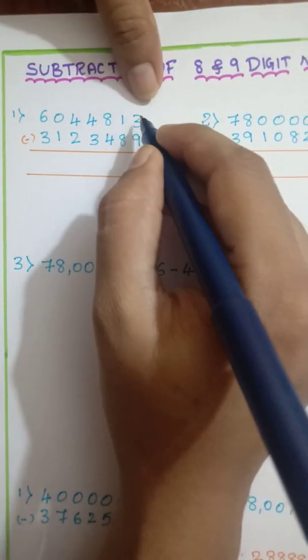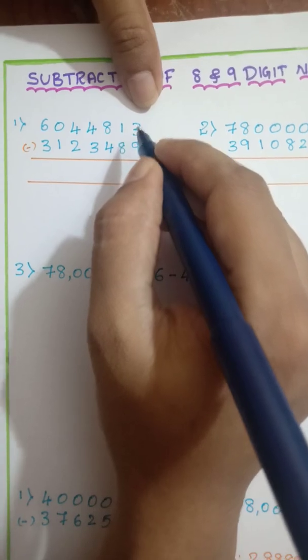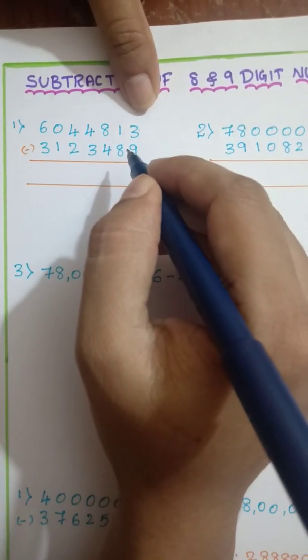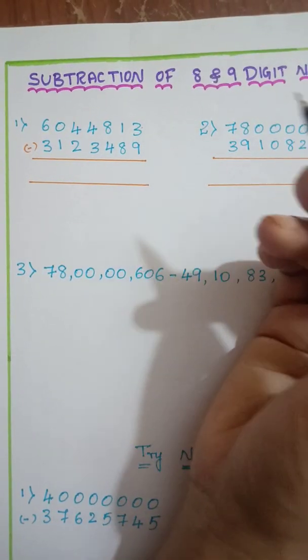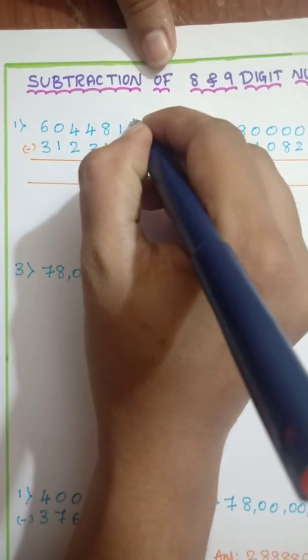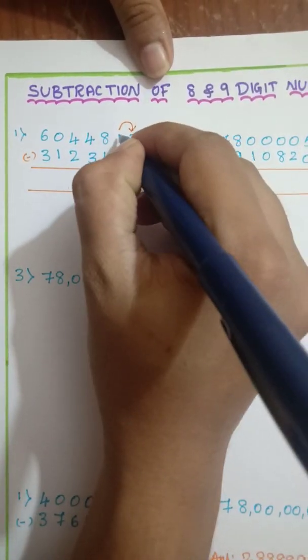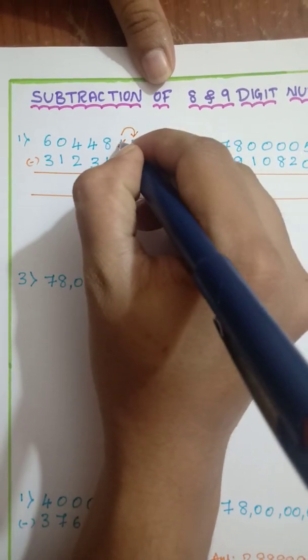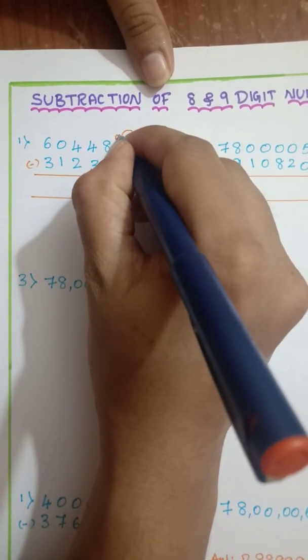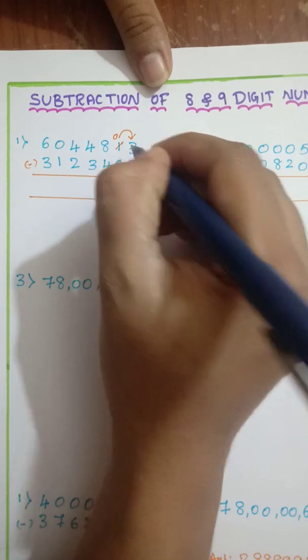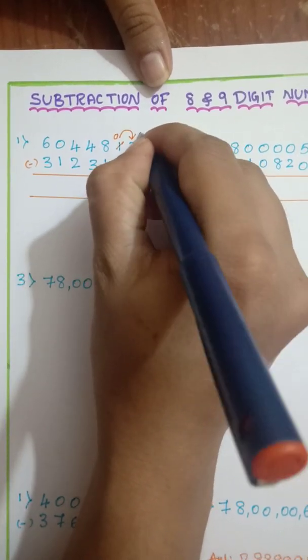So now from 3 can you subtract 9? Is it possible? No. So then what we can do, we can take borrow from 1. So when you take borrow, the 1 will become 0 and the 3 will become 13.